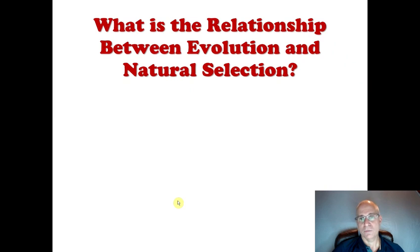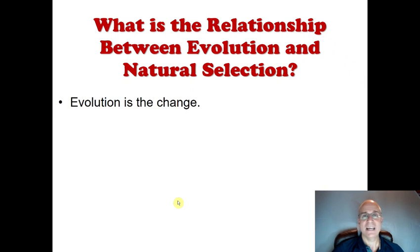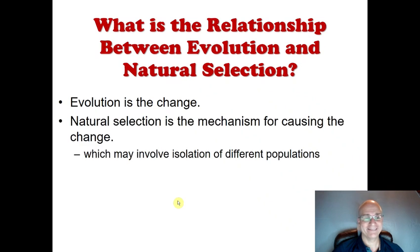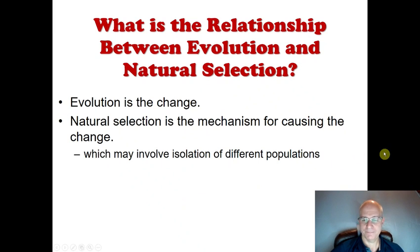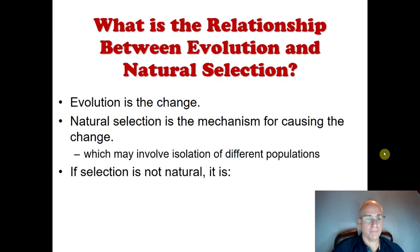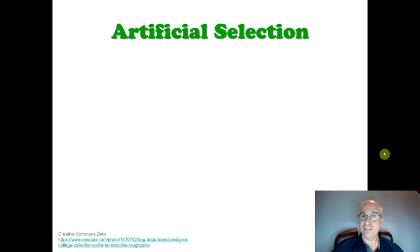So again, what's the relationship between evolution and natural selection? Evolution is the change. Natural selection is the mechanism for causing that change, which may involve isolation of different populations. Sometimes we can have selection that isn't natural — in that case we call it artificial selection.